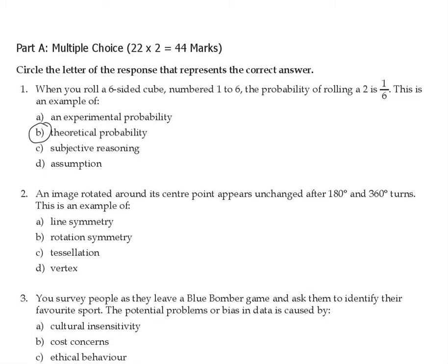Experimental probability is the results that come from an actual experiment. This question is also not assumption and not subjective reasoning. We know for sure the theoretical probability of rolling one side of the cube is 1 over 6.